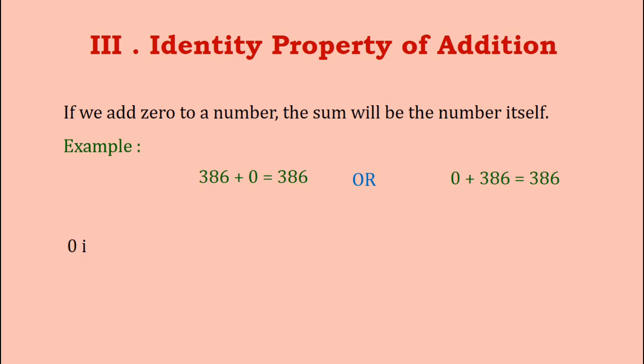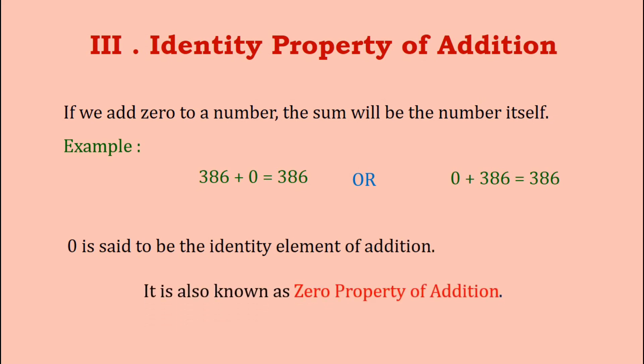Here, zero is said to be the identity element of addition. This property is also known as the zero property of addition.